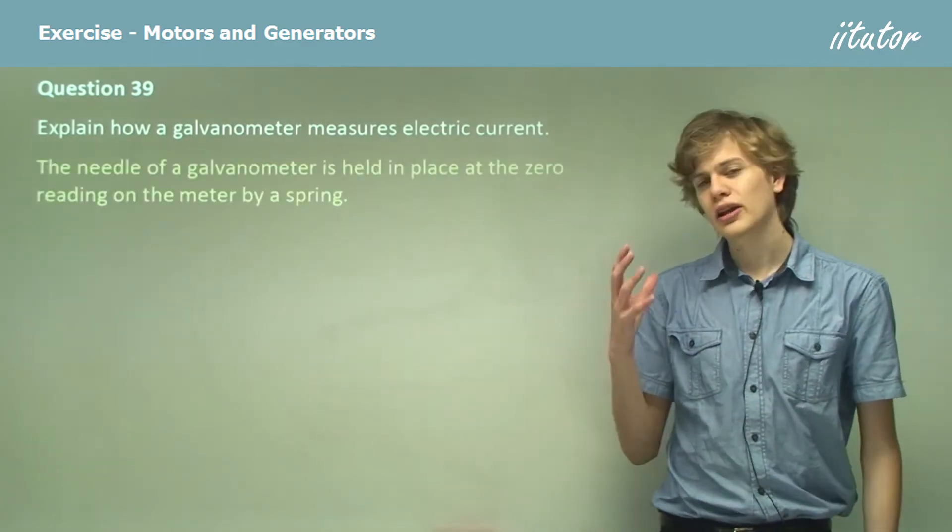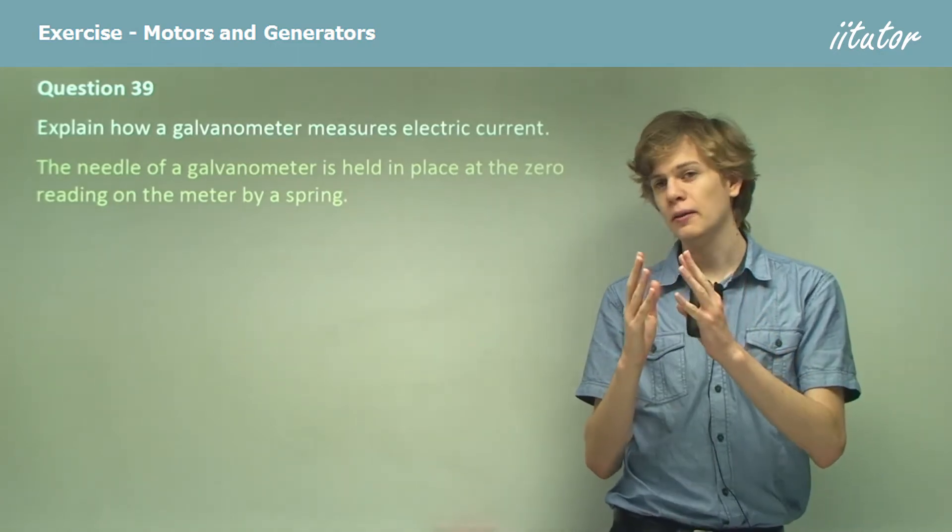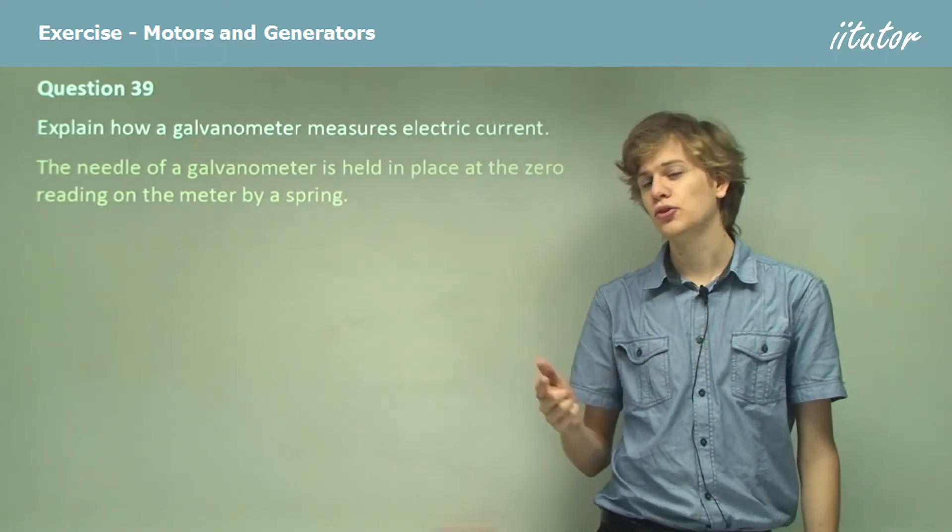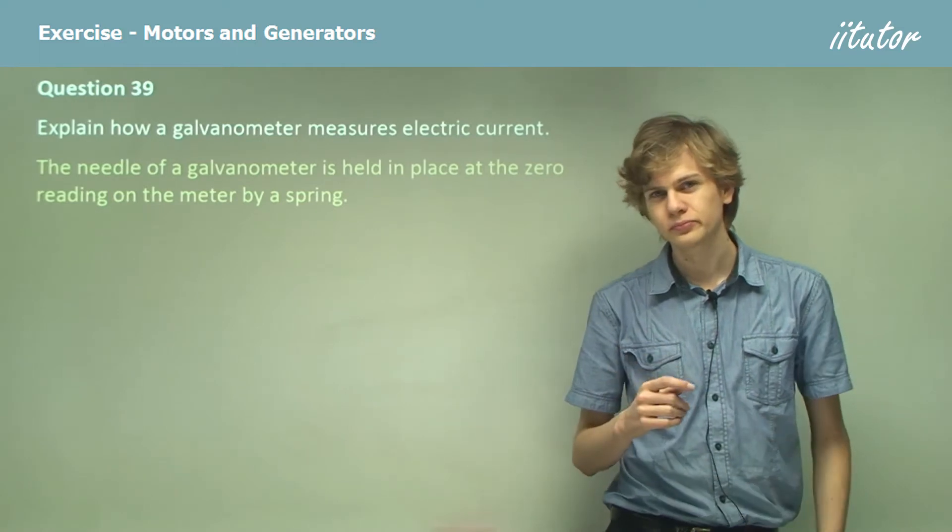So the needle of a galvanometer is held in place at the zero reading by a spring. The spring is coiled so that if we were to push the needle to the left or to the right, the spring would pull it back to zero.